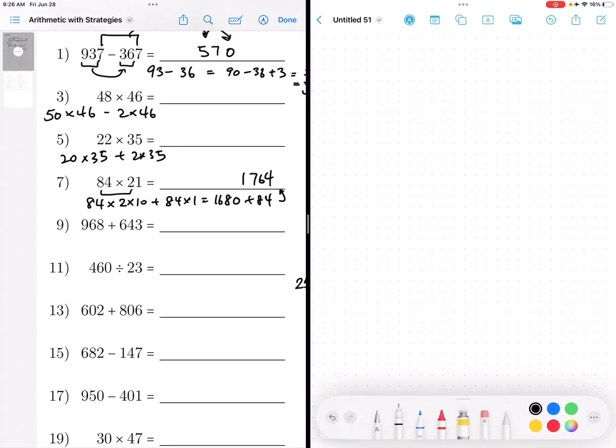If you're able to break down numbers into smaller pieces and work around certain types of numbers, you can make life a lot easier. So let's look at number 3. You have 48 times 46.